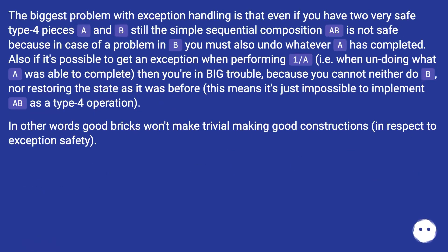The biggest problem with exception handling is that even if you have two very safe type-4 pieces A and B, the simple sequential composition of A and B is not safe. Because in case of a problem in B, you must also undo whatever A has completed. Also, if it's possible to get an exception when undoing what A was able to complete, then you're in big trouble — you can neither complete B nor restore the state as it was before. This means it's just impossible to implement as a type-4 operation. In other words, good bricks don't trivially make good constructions with respect to exception safety.